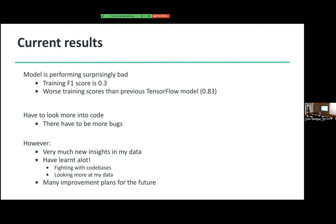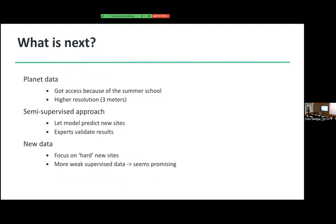I have a lot of improvement plans for the future. First, planet data — the summer school has access to Planet satellite data, which is higher resolution at 3 meters instead of 10 meters. I think it will be a big boost for my project because the average thaw of permafrost thaw slumps in Canada is between 7 and 26 meters a year. With Sentinel-2 that means only about two pixels max per year. With Planet I can increase that to more pixels, so it would be great to implement Planet data. I was also thinking about a semi-supervised approach — letting the model predict new sites and having experts validate those results, as a way to incorporate more data across the whole Arctic.